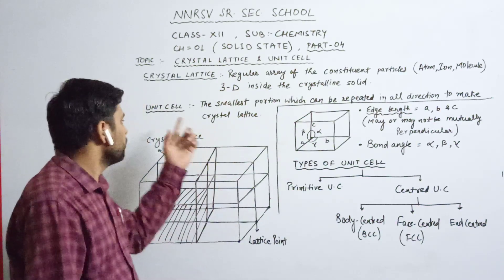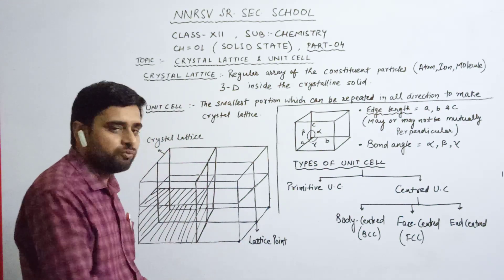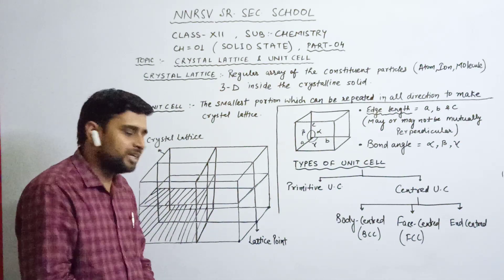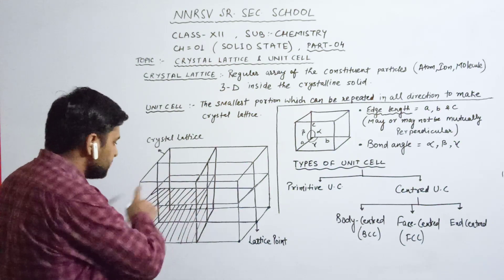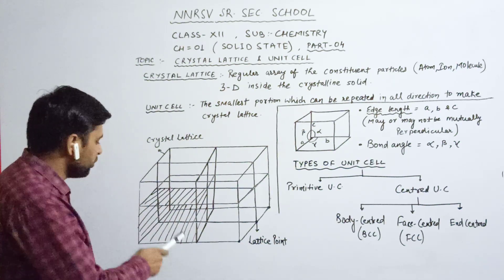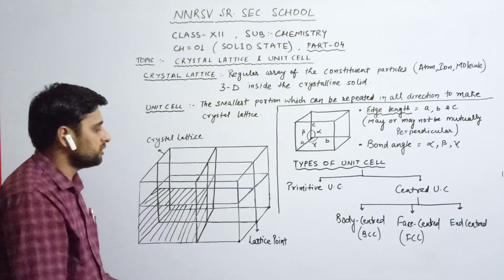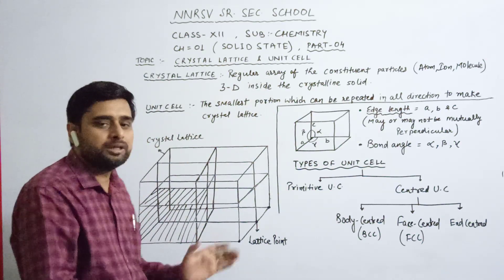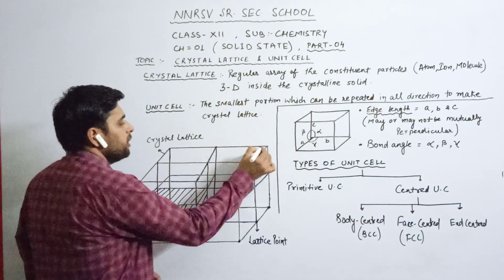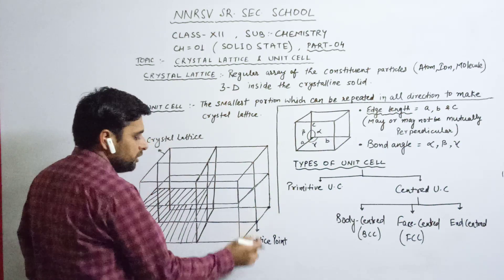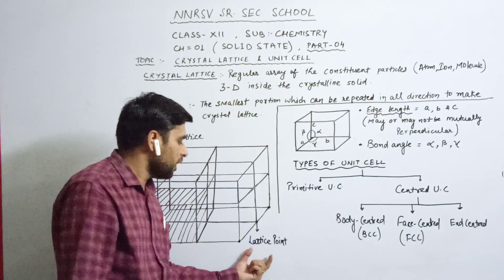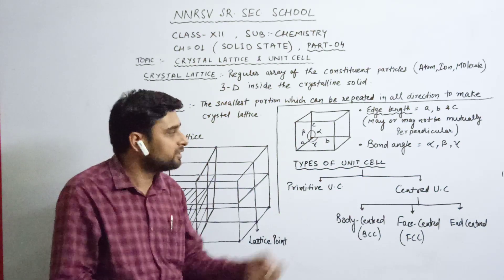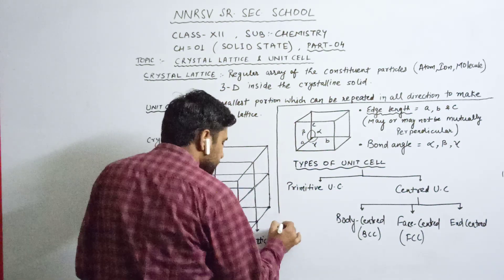I have drawn an image for you. This image shows eight cubic unit cells. The shaded portion of this crystal lattice is known as the unit cell, because it is the smallest portion which can be regularly arranged to make a crystal lattice in crystalline solids. The points present in the lattice are known as lattice points, which contain constituent particles like atoms and ions.